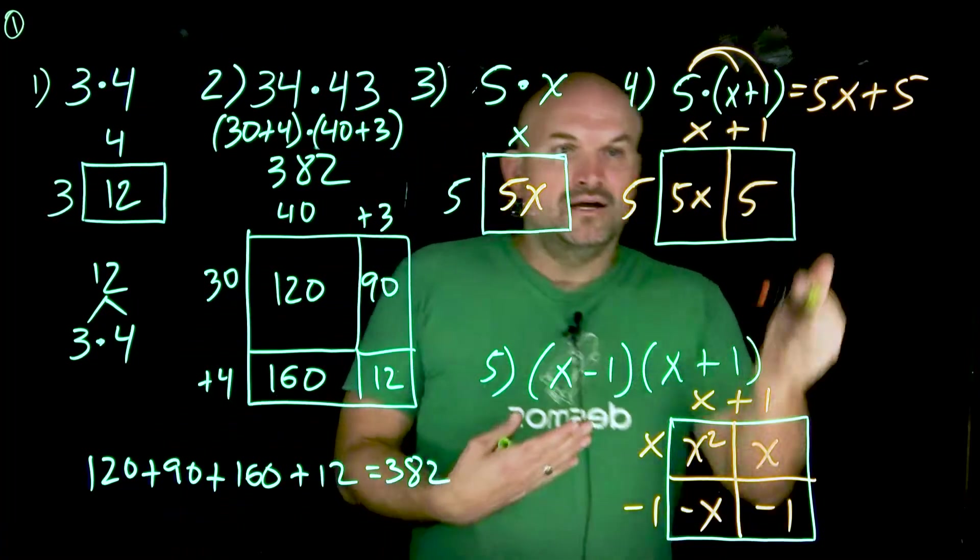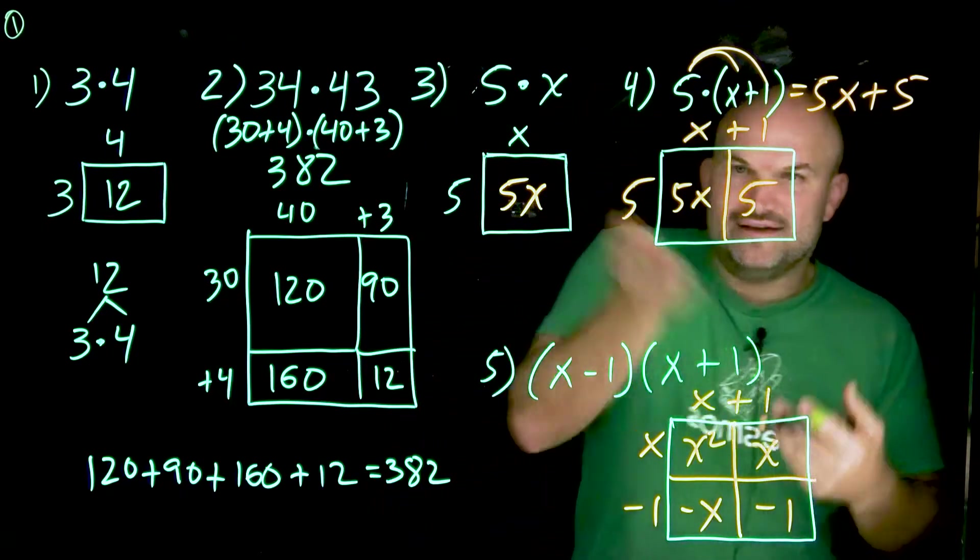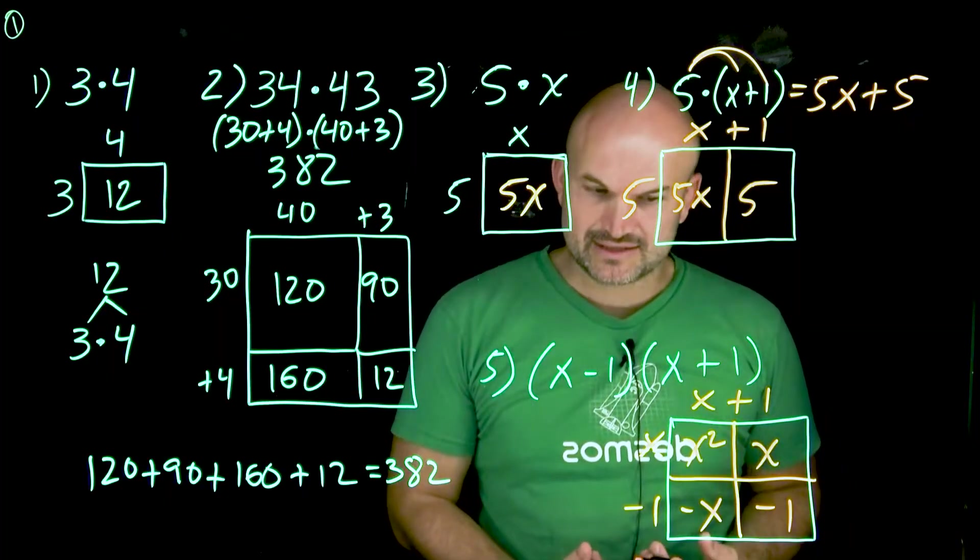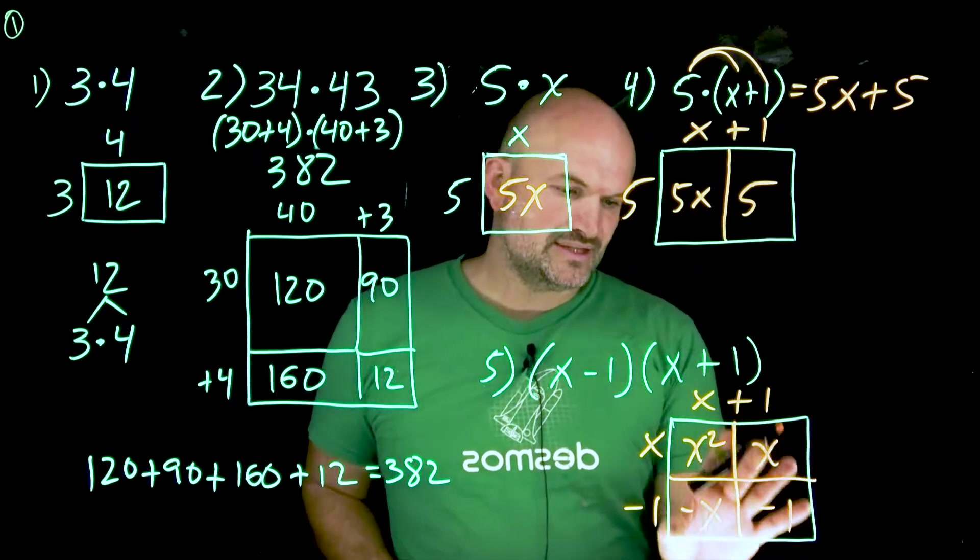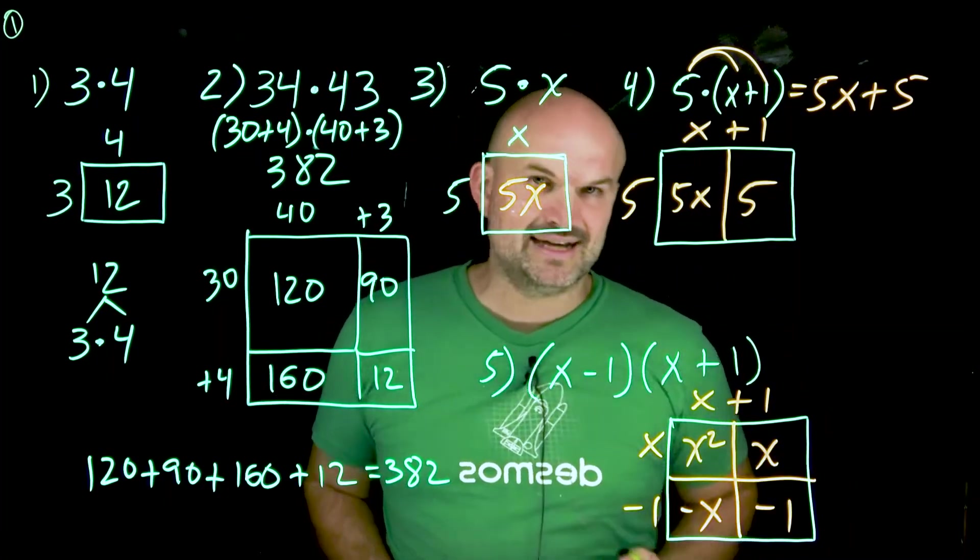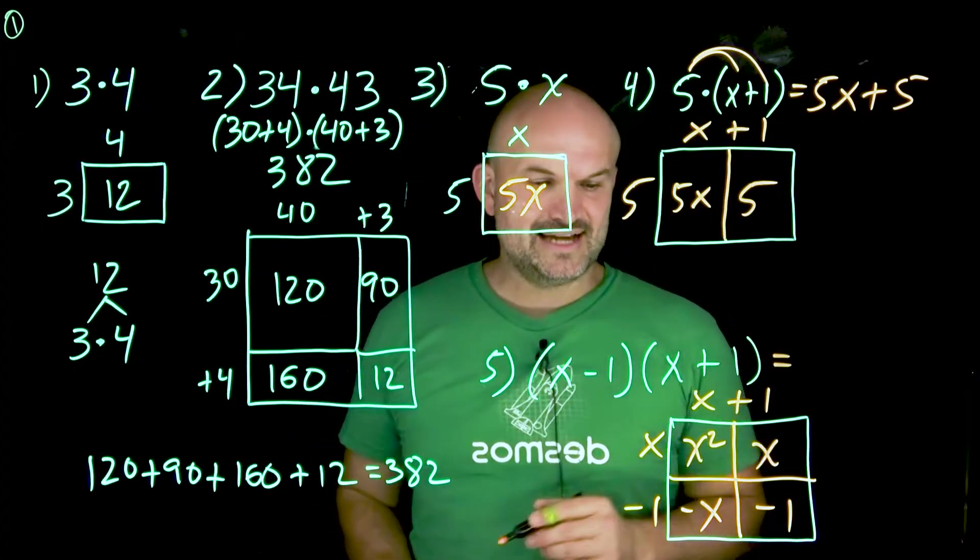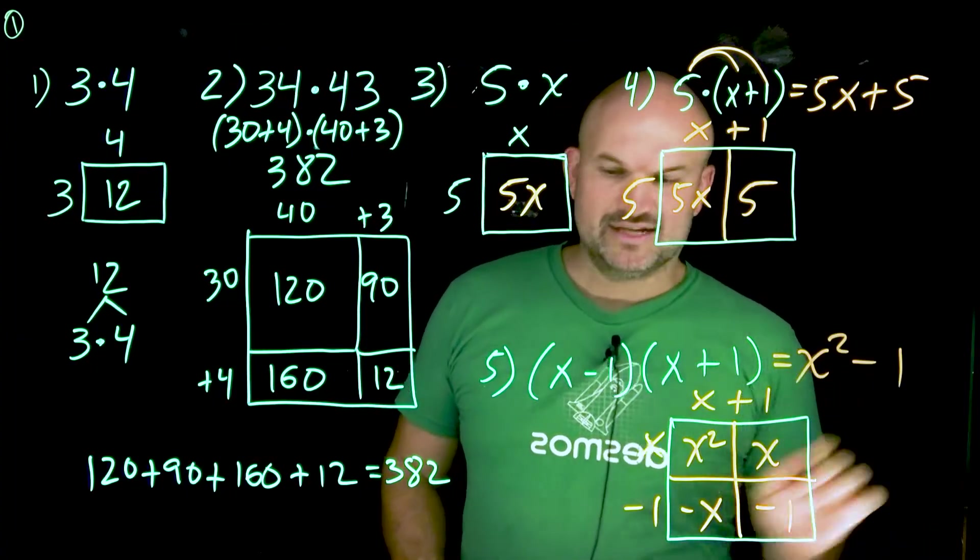Now, when you start to compute this area over here, there's nothing really we could do, right? Five X does not combine with five. Here though, you can see we have a negative X and we have a positive X, right? And so what I want you to be able to see here is that those are going to combine to give you a zero X, which is just zero. So the final answer in this case is just going to be X squared minus one.